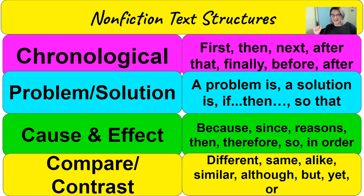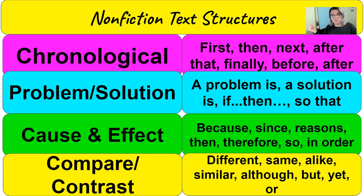What about cause and effect? Cause and effect are texts that talk about how something happens and then causes other things to happen. Words to look out for are: because, since, reasons, then, therefore, so, and in order.